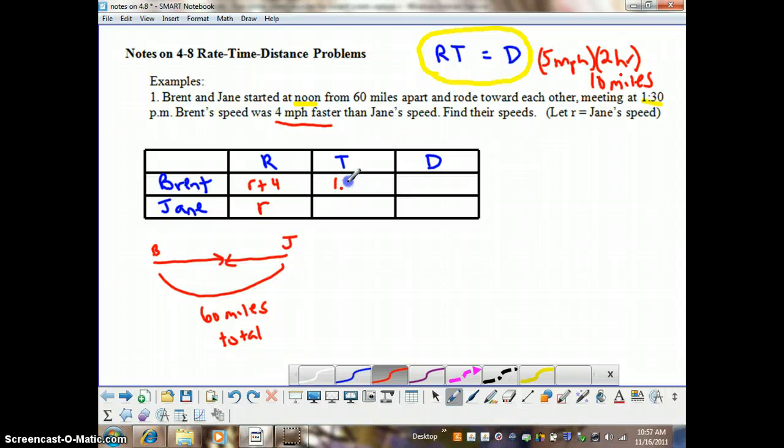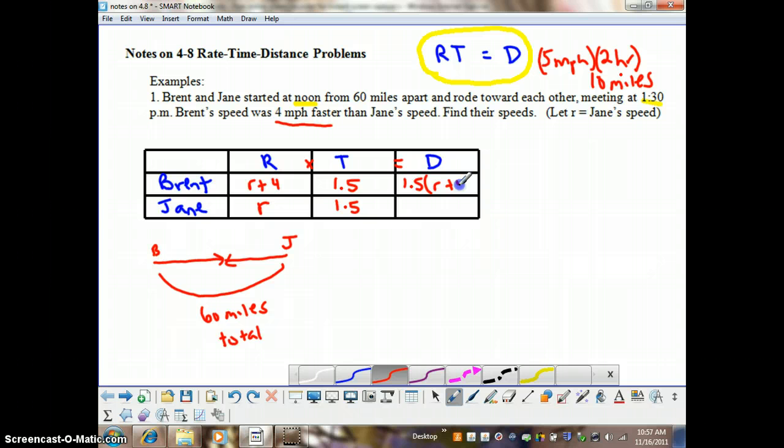So, I'm going to write 1.5 for the time in both of these. And we know that rate times time equals distance. So, I'm just going to multiply across here on my chart. We'd have 1.5 times the quantity r plus 4 for Brent, and 1.5r for Jane.